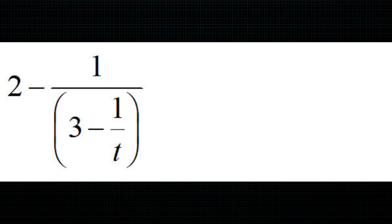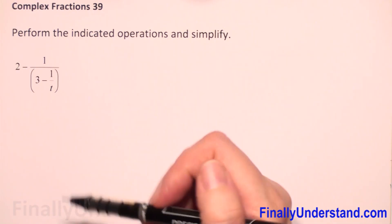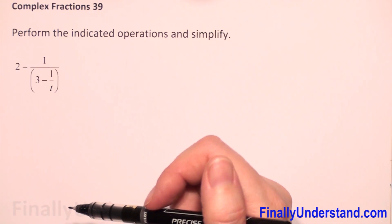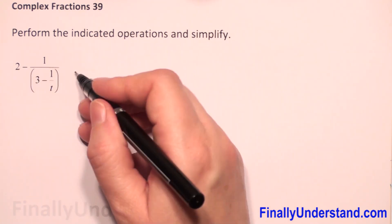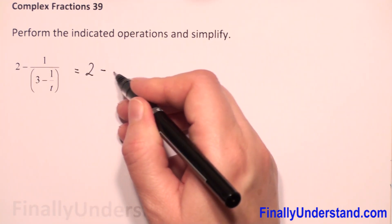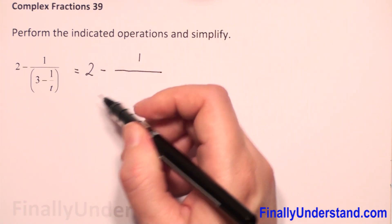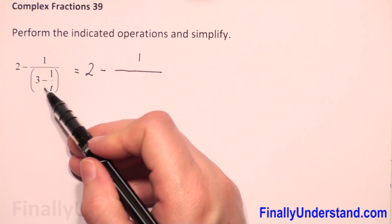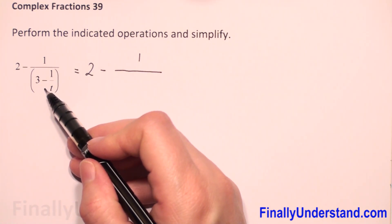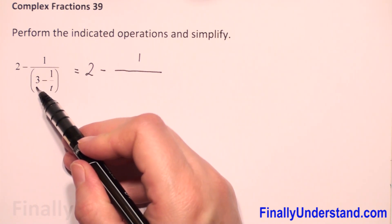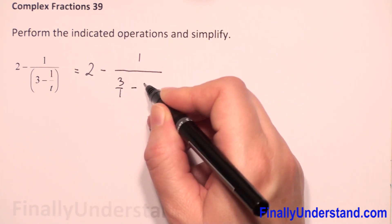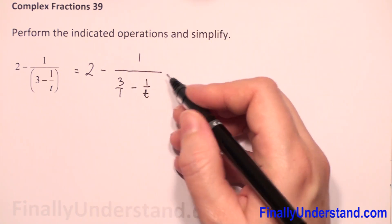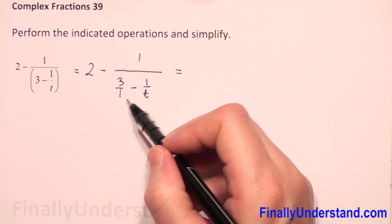We have a complex fraction because we have a fraction in the numerator. First we have to start with the operation in parentheses. We copy 2, we have minus 1, and here we have subtraction. We have a number and a fraction, so I will change the number to a fraction: 3 over 1, and we have minus 1 over t. We copy and next we have subtraction.